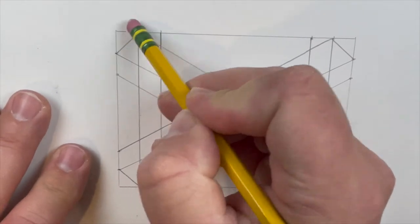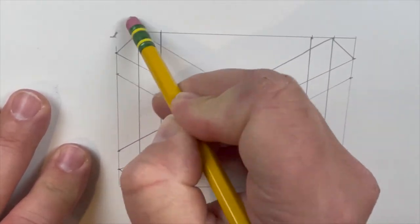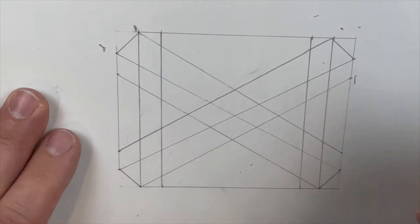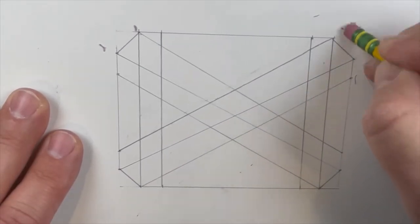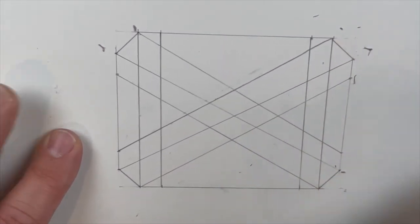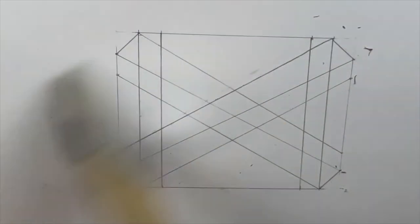Alright, now we're going to start doing the erasing. So the first thing you're going to erase is you're going to erase the corners, just like so. So basically where you made those corner lines, that is not needed there. And then you're going to start erasing some of the inside.